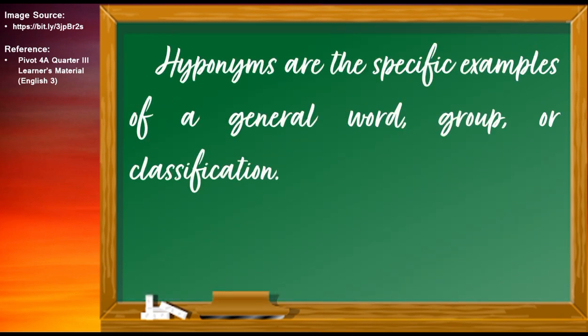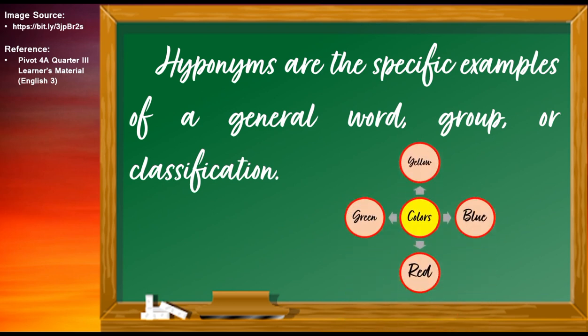Hyponyms are the specific examples of a general word, group, or classification. This example shows us that the general word or classification is colors. Yellow, blue, red, and green are the hyponyms.